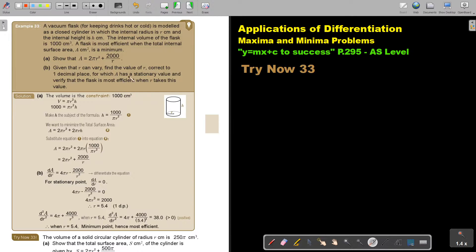Now I must find for which A has a stationary value, and verify the flask is most efficient. So now I am going to find the nature of this point. So I say d²A/dR², the second derivative, and then I get this. So when R is this, I substitute, I get a positive value, bigger than 0. So when R is 5.5, it will be a minimum point, which is most efficient.